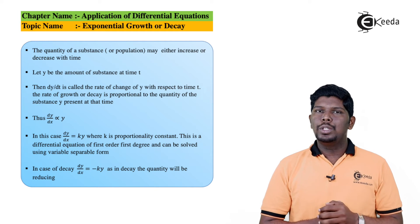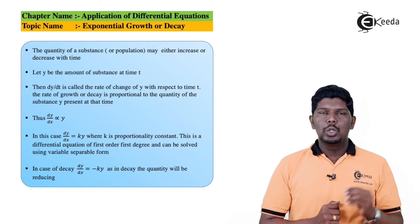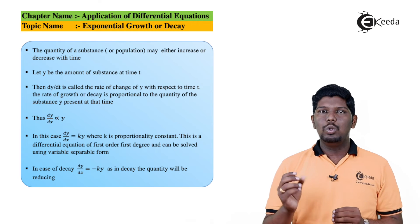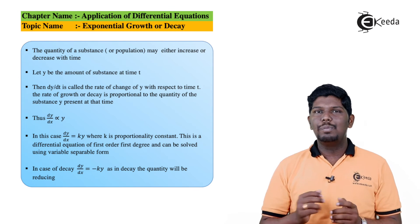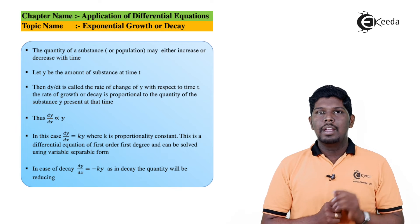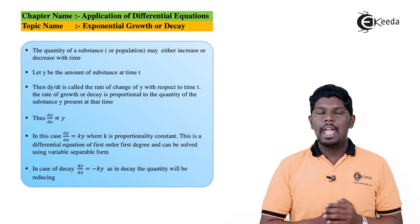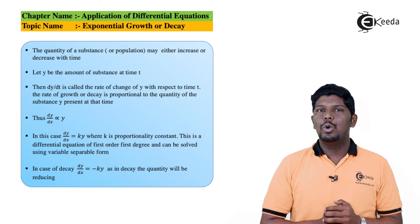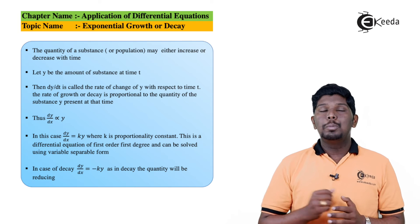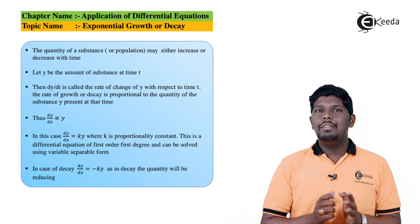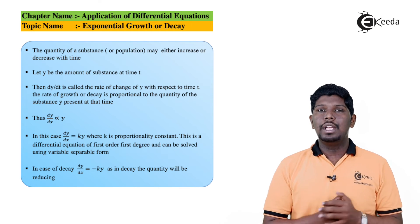Now let us remove the sign of proportionality and give it a constant. So we have written dy by dt is equal to ky where k is the constant of proportionality. Remember, whenever we have an increase we are going to write plus k, and whenever we have a decrease, in case of decay, we are going to take it as minus k. So by framing such problems we can directly find the population after a particular given time.